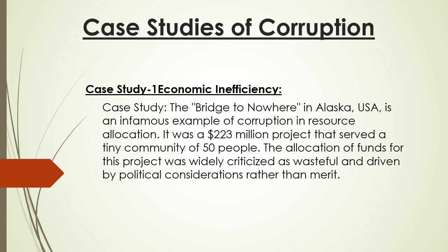Case Study 1 — Economic Inefficiency. The Bridge to Nowhere in Alaska, USA, is an infamous example of corruption in resource allocation. It was a $223 million project that served a tiny community of 50 people. The allocation of funds for this project was widely criticized as wasteful and driven by political considerations rather than merit.